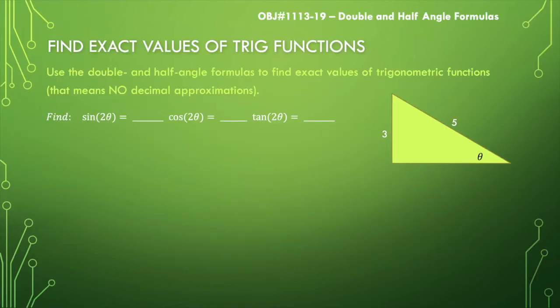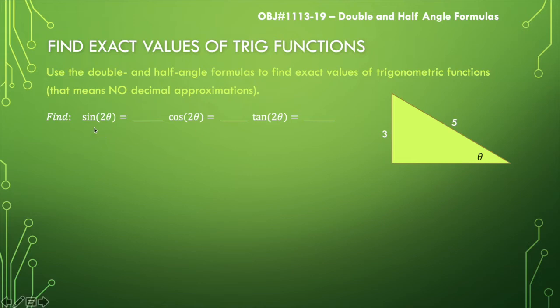Here is an example. We are going to use double and half angle formulas to find the exact values of trig functions. When it says exact values, that means no decimal approximations. So let's say I'm given a right triangle — I'm telling you it's a right triangle even though it's not marked as one. I'm given an acute angle theta, the opposite side is three, and the hypotenuse is five. I'm tasked with finding the values for sine of two theta, cosine of two theta, and tangent of two theta.